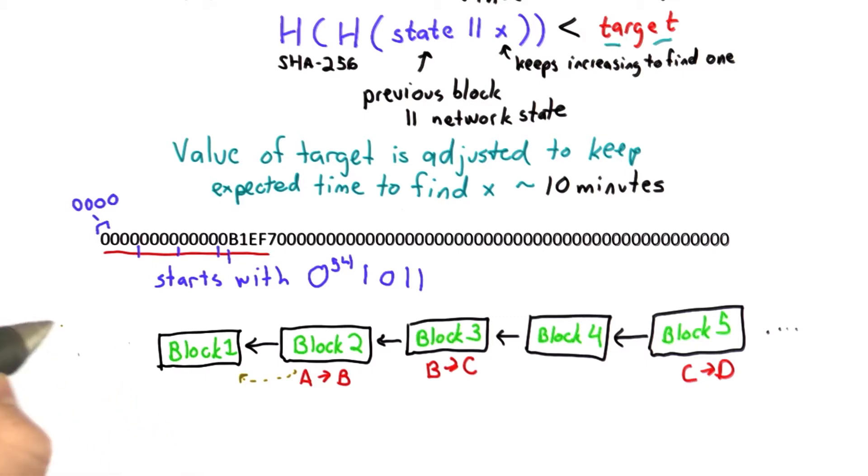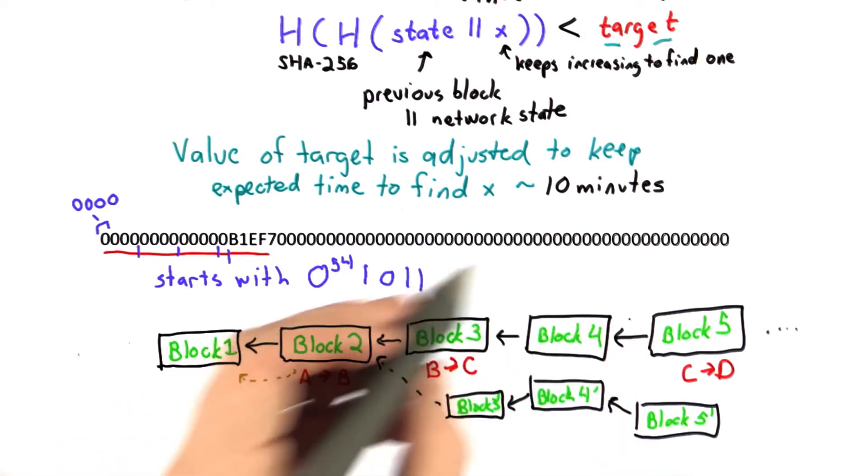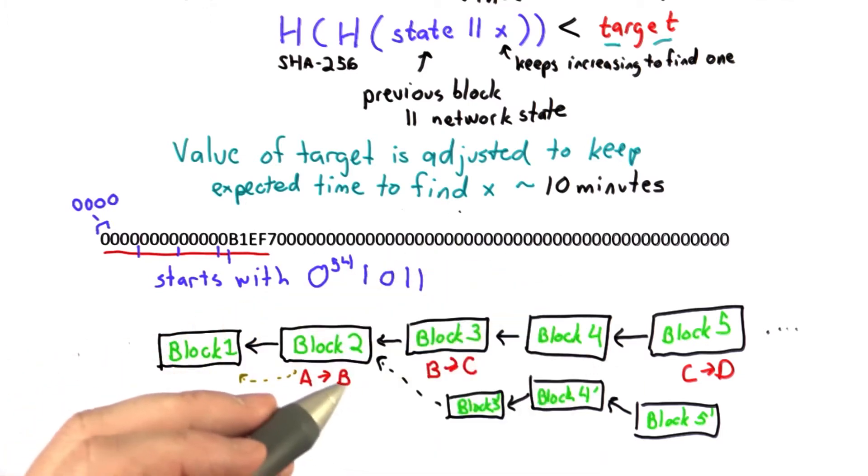Someone could try to create an alternate blockchain. So if Bob wants to spend the coin twice, what Bob would need to do is create a chain that's longer than the longest chain. When a transaction is validated by the network, all the signatures in the coin are checked.